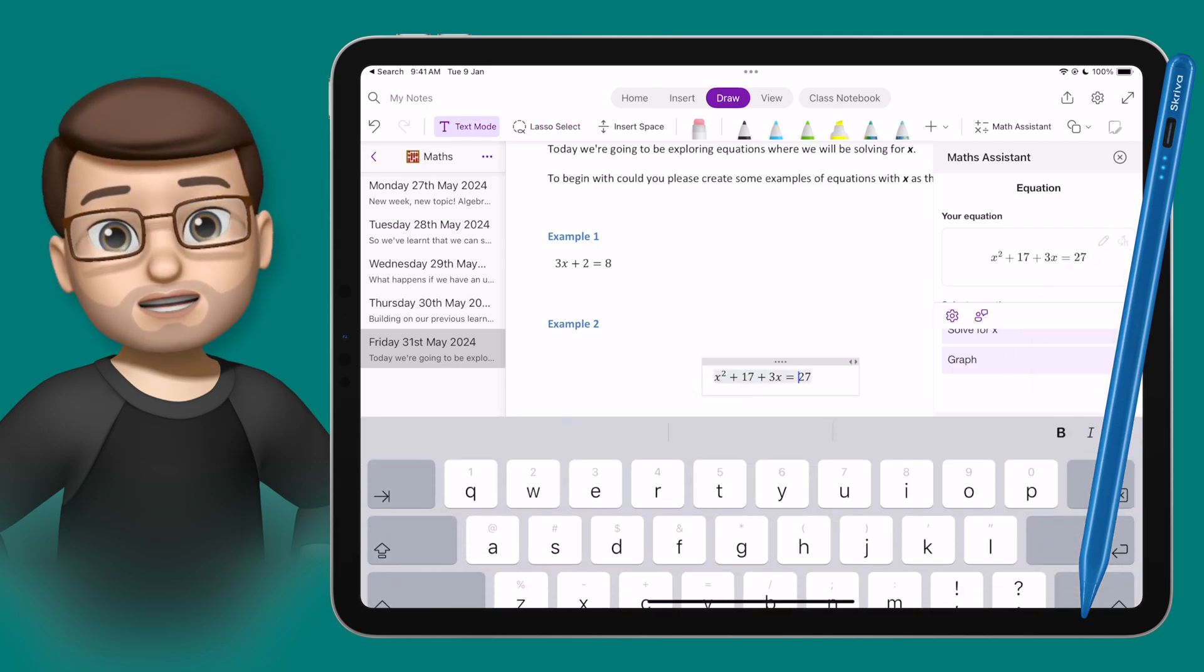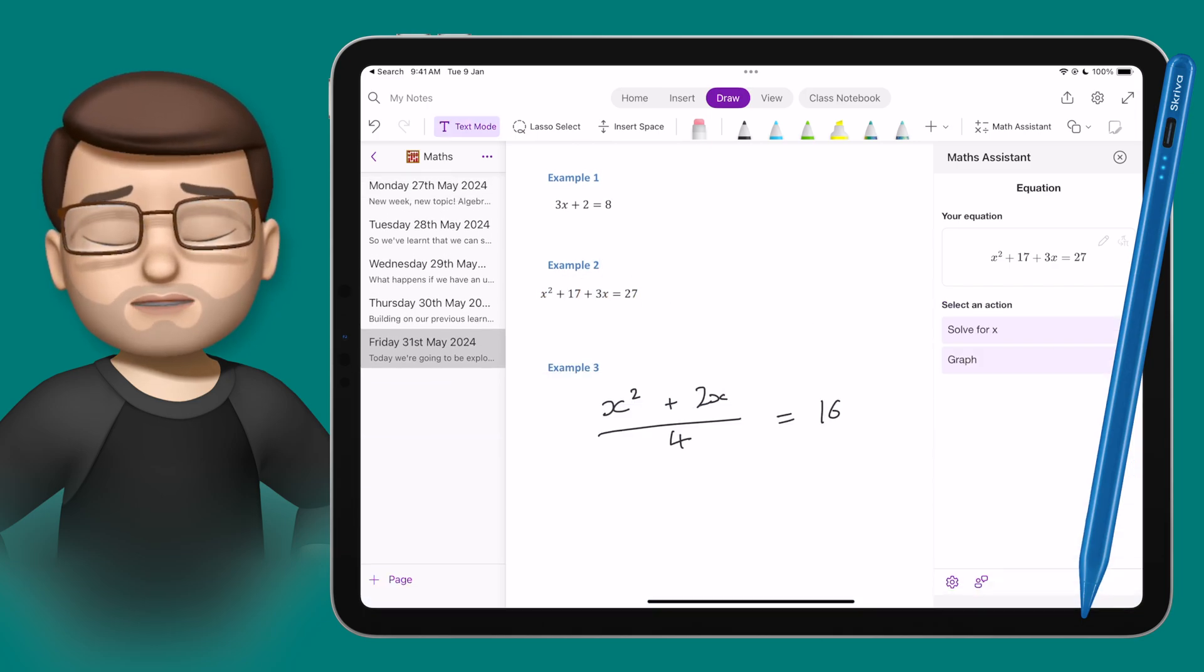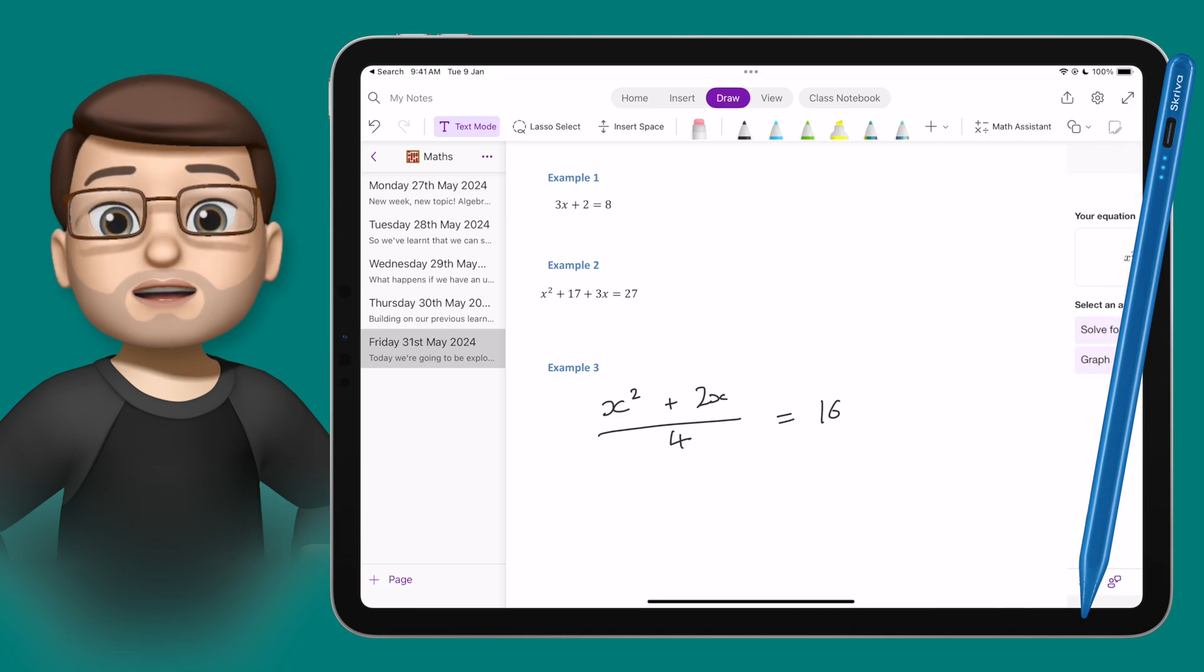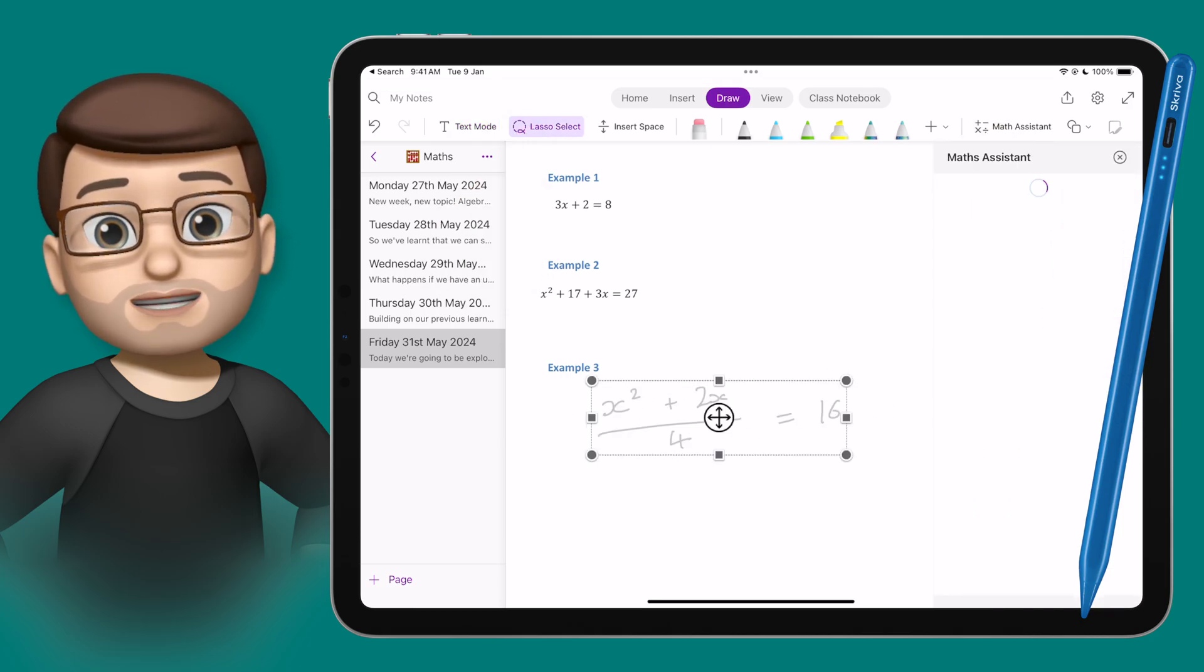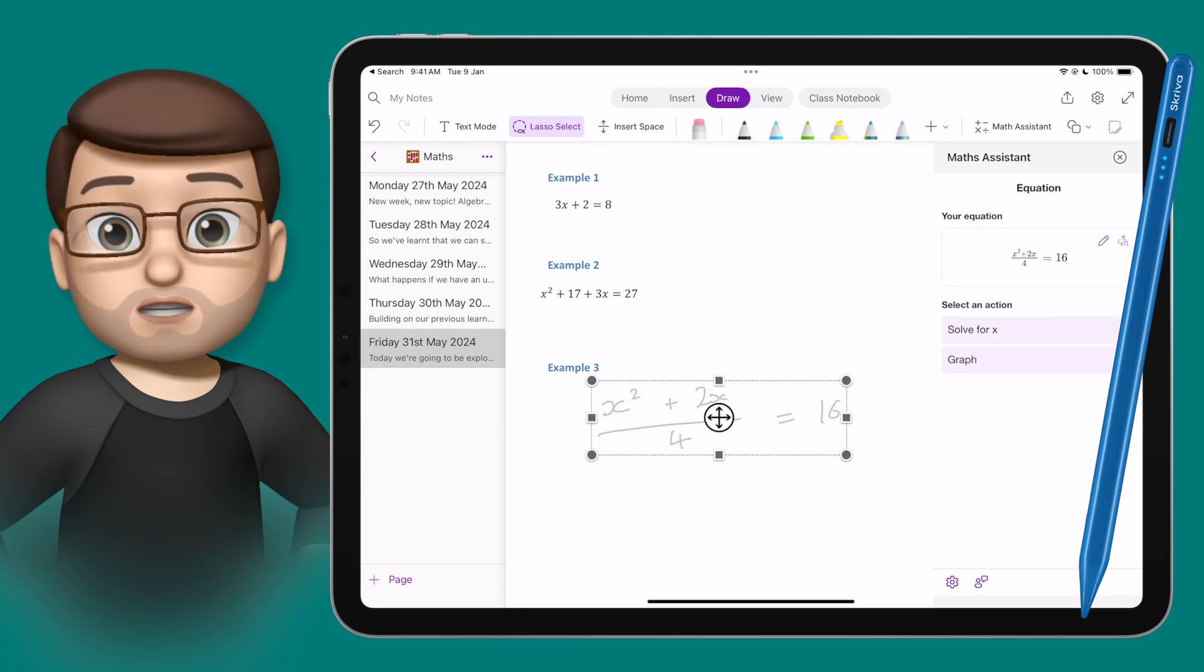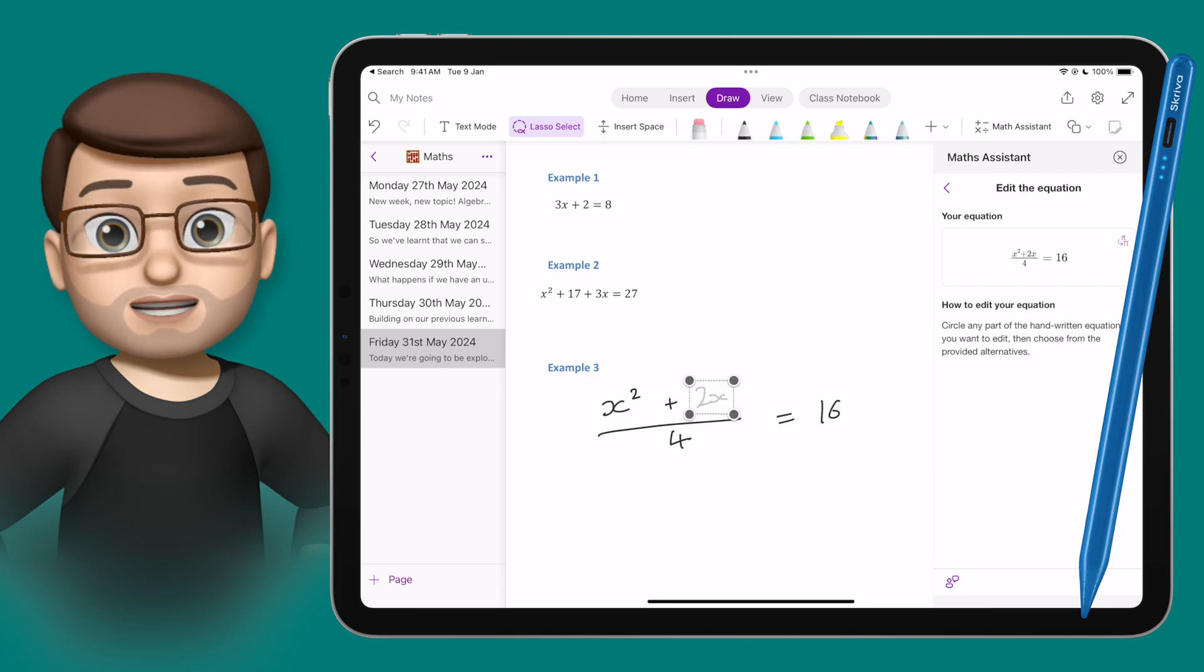But what happens if it doesn't quite interpret your text properly? Maybe it's ambiguous if you've written a 6, or a 0, or an 8, or something like that. Well, on my last equation, I'm going to convert it to text again, but we're going to pretend that where I've written 2x, it's actually got confused. This time, I'm going to press the little pencil icon, which edits my equation, and I'm going to draw a smaller box around the part of the equation that it's not quite got right.